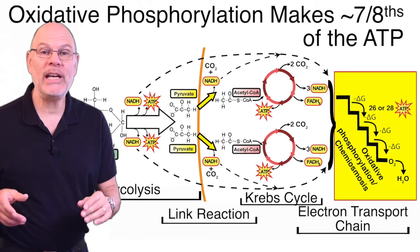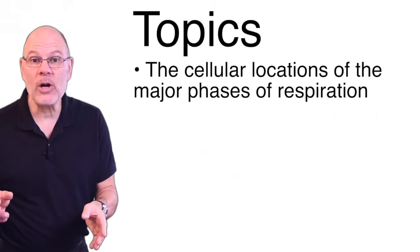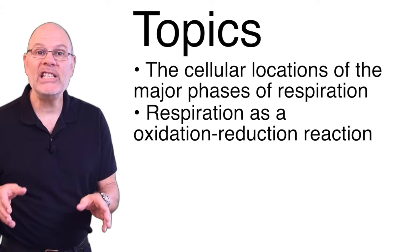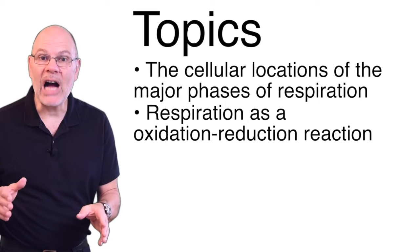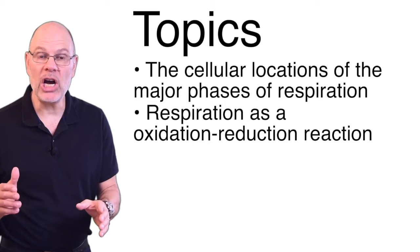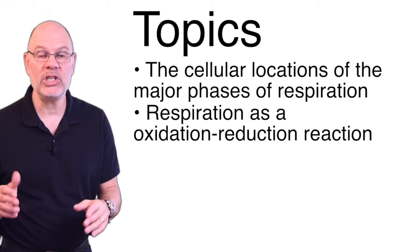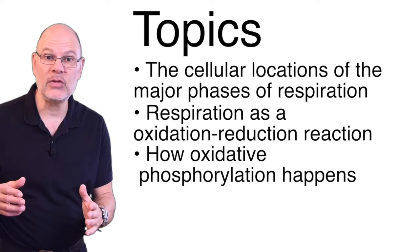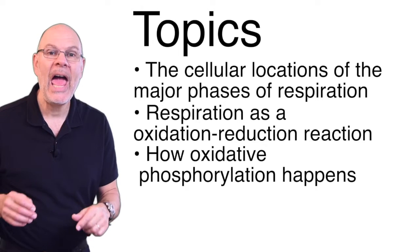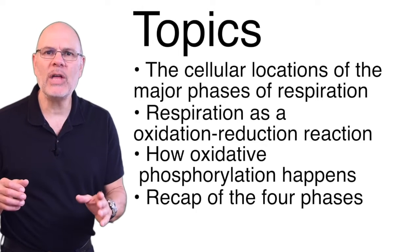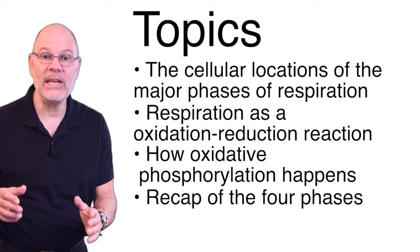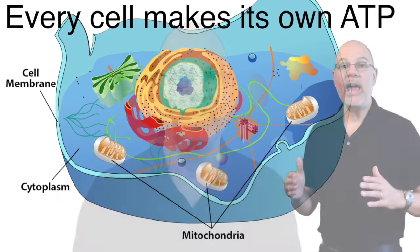As I explain it, we're going to cover the following: where cellular respiration happens, the connection between oxidation, reduction, and respiration, how cells make ATP through oxidative phosphorylation, and we're going to review the highlights of the four major phases of cellular respiration. Let's go.